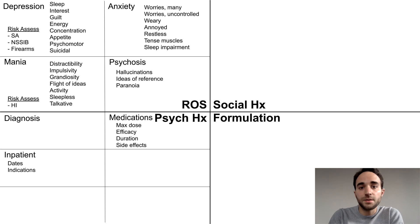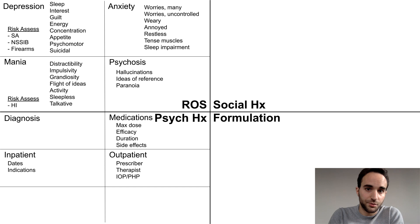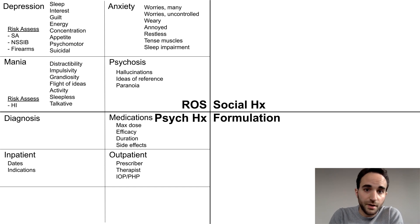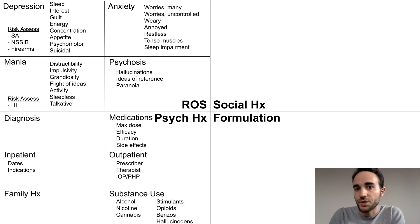Asking these questions will help you to determine if the patient actually had adequate trials of these medications, and to know how well they were tolerated. Next, ask about any past inpatient psychiatric treatment — it's important to know the approximate dates of admission and the indications for which they were admitted. Then ask about outpatient psychiatric treatment, including who is prescribing the medications, who is providing them therapy, and any intensive outpatient or partial hospital program treatments they've had in the past. Finally, ask about family history of mental illness, any problems the patient has had in the past with substance use, as well as their current use of substances.